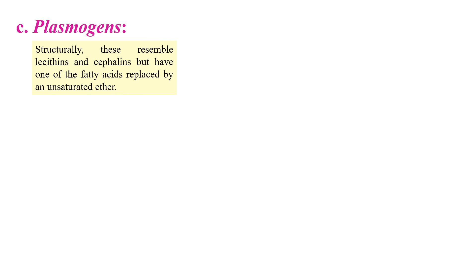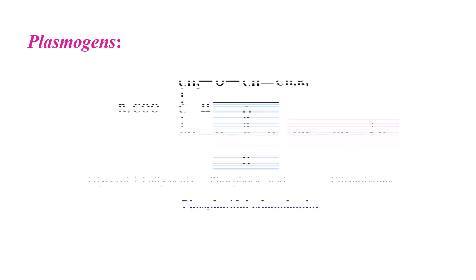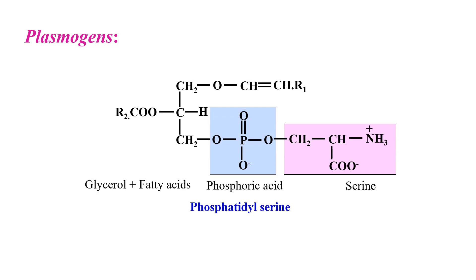The next type is plasmogens, which are also related to cephalins, but the main difference is that one of the fatty acids is replaced by an unsaturated ether, as you can clearly see marked here in the red circle. The rest of the molecule remains the same — it may either have choline or ethanolamine, as in the case of cephalins, or serine. The main difference is that the first fatty acid is replaced with the ether.